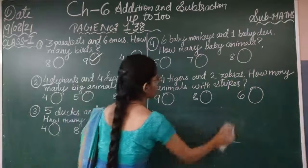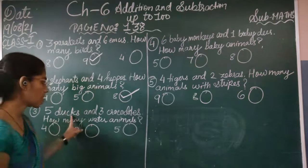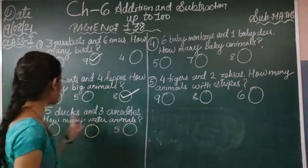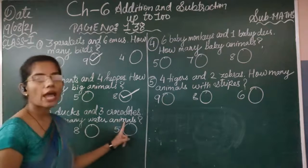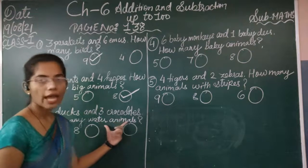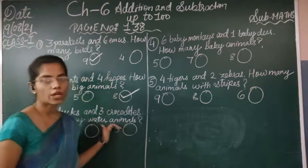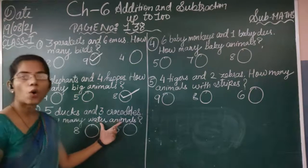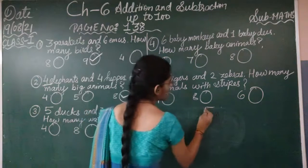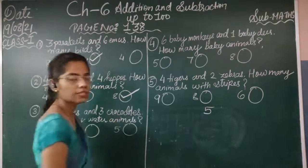Now the next question: 5 ducks and 3 crocodiles. How many water animals? The question asks you to count the total number of water animals. We have to add the number of ducks and the number of crocodiles.